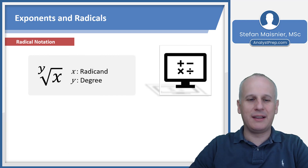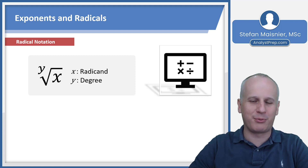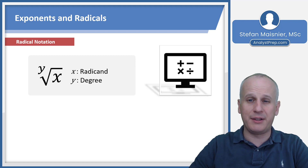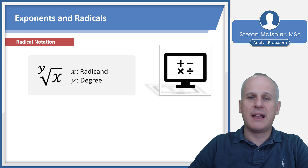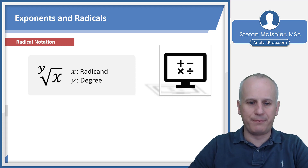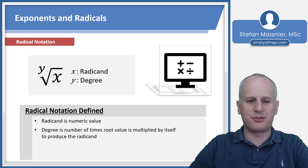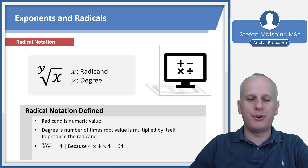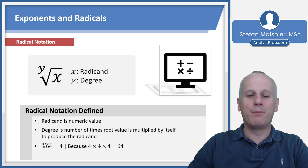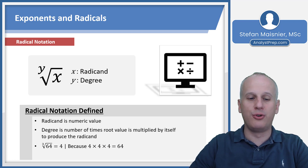Radical notation is kind of the inverse of exponential notation. The x underneath the radical symbol is known as the radicand, and the y outside is known as the degree. If there is no degree shown, it's assumed to be a square root. The degree is the number of times that root value is multiplied by itself to produce the radicand. So the cube root of 64 equals 4 because 4 times 4 times 4 equals 64.